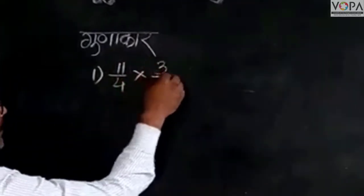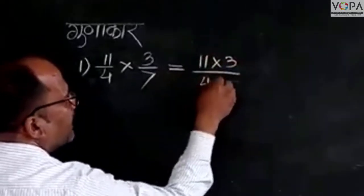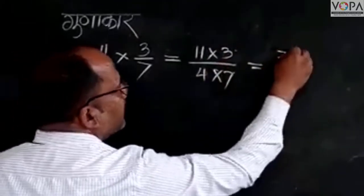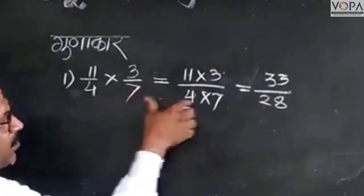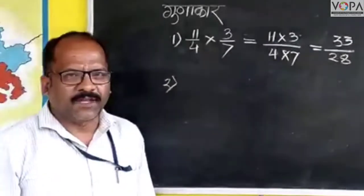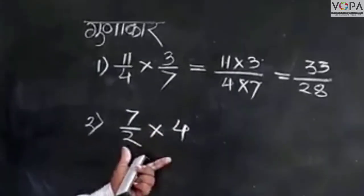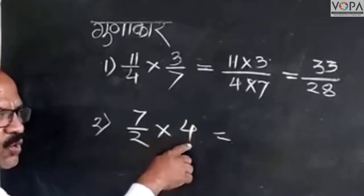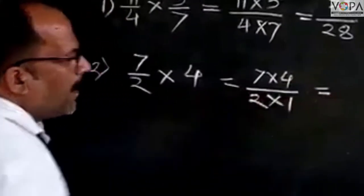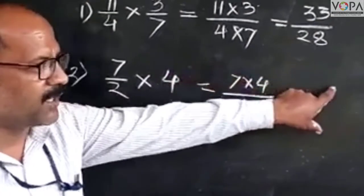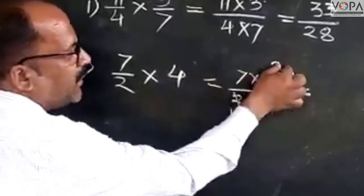4 ગુનિલે 3 આઉંં છેથ 7 આપં પહેલે લહે આપં પાવ્યા 7 આંં છેથ 2 ગુણેલે 4 — 2 ગુણેલે 1. So if we learn this about true increase the weights and recover the weight 2, 4, 7.